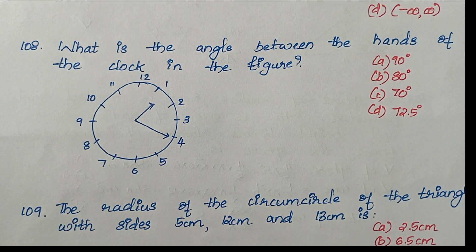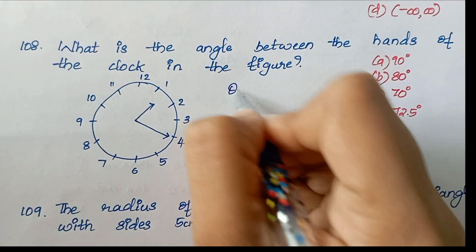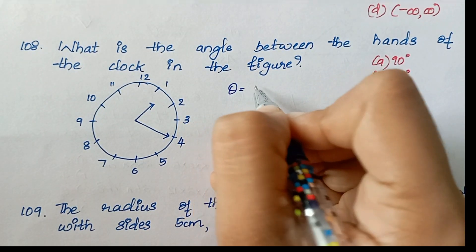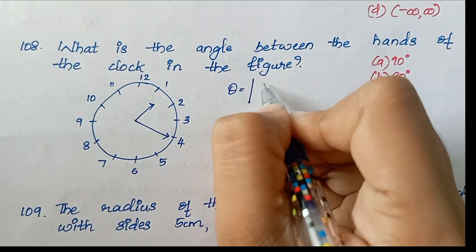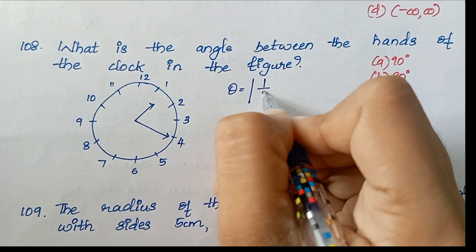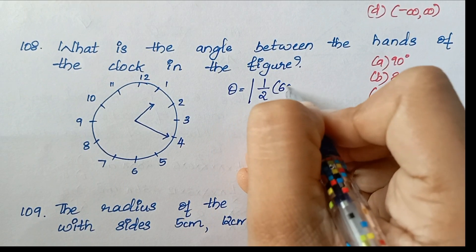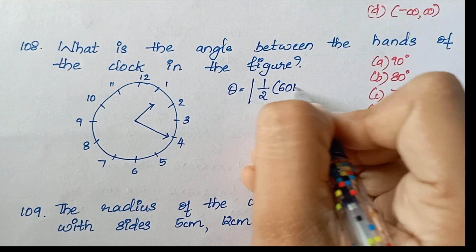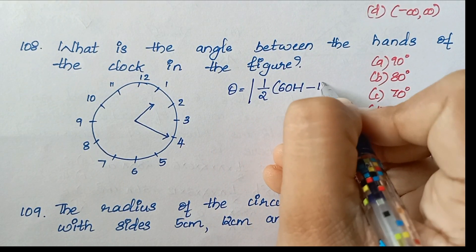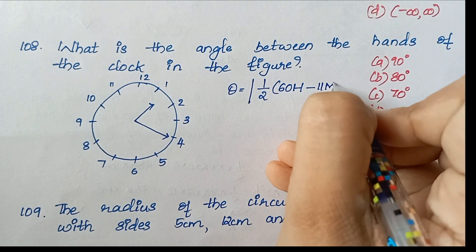Question 108: Find the angle between clock hands. The formula is |½(60H − 11M)|. We substitute H = 1 and M = 20.